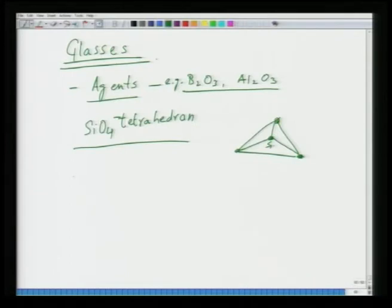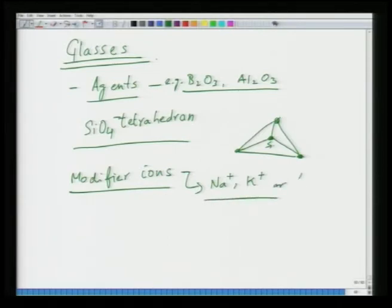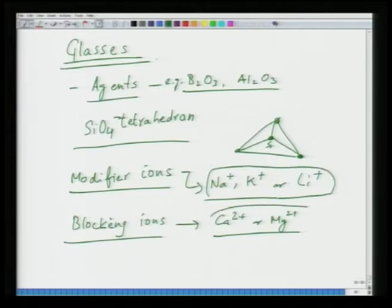There are two types of ions in glass: modifier ions, which are typically smaller-sized ions like sodium, potassium, or lithium that increase conductivity; and blocking ions, which are larger-sized cations such as calcium or magnesium. The increase in conductivity upon addition of modifier ions is much larger than upon addition of blocking ions.